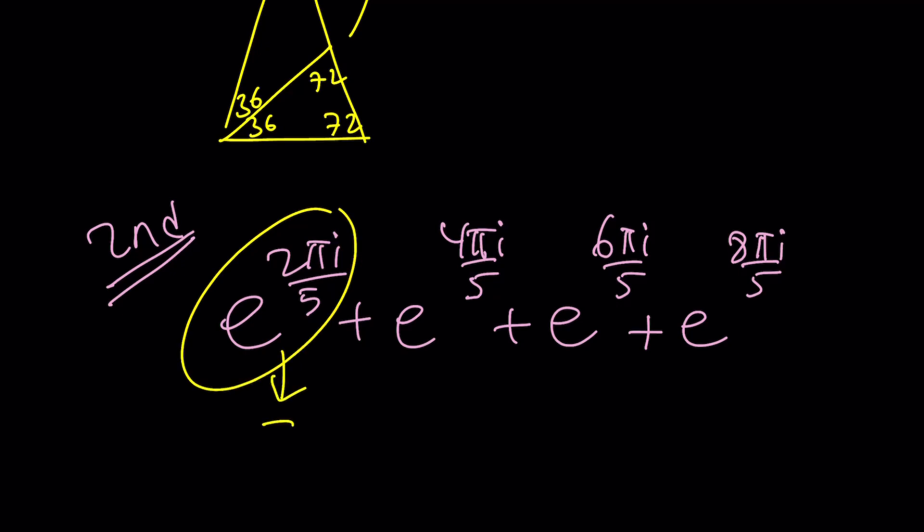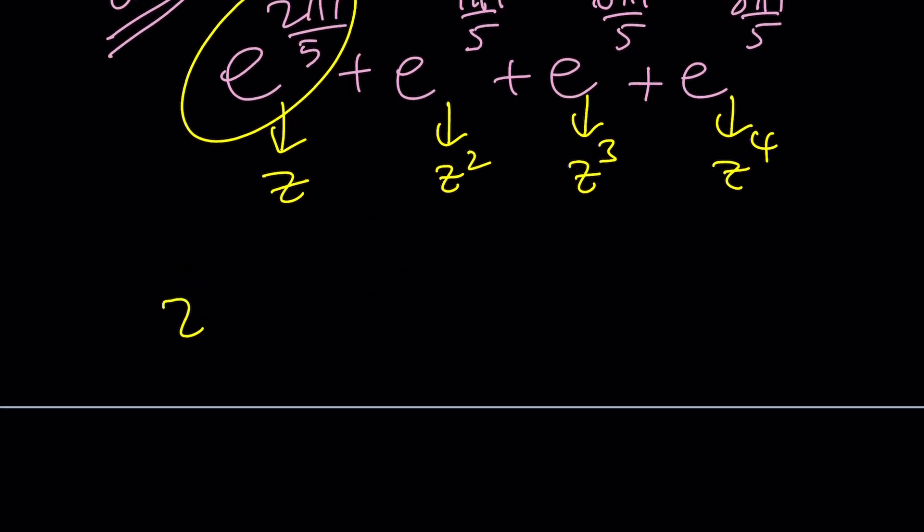So we're going to use substitution because substitution is powerful. Let's go ahead and call this Z. And this becomes Z squared. This becomes Z cubed. And this becomes Z to the fourth power. You see that? They're all multiples. So now we've got the following: Z plus Z squared plus Z cubed plus Z to the fourth. Beautiful.